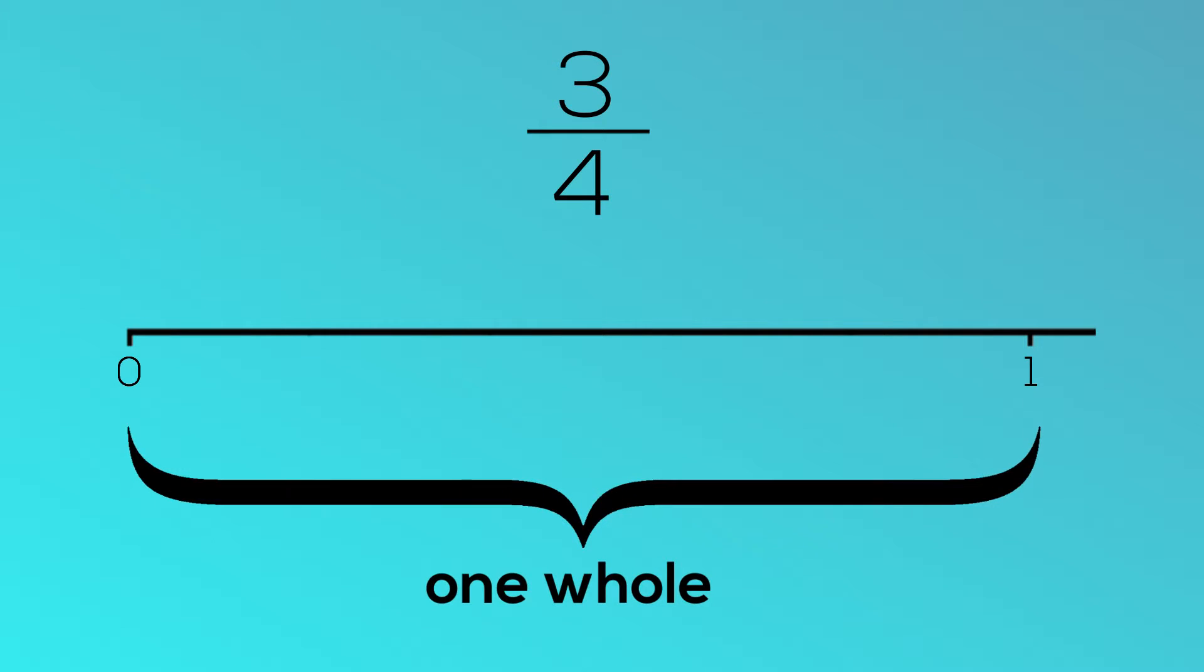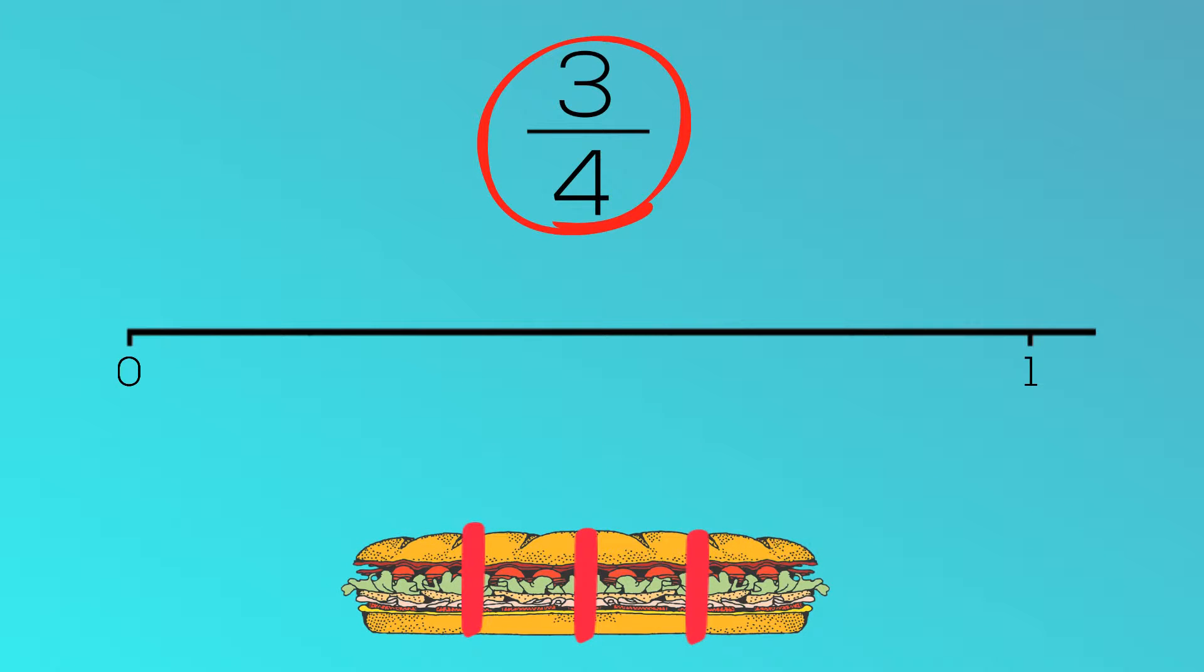Now think about three-quarters of the sandwich. We know that three-quarters is less than one whole. That means the fraction must go somewhere between zero and one.